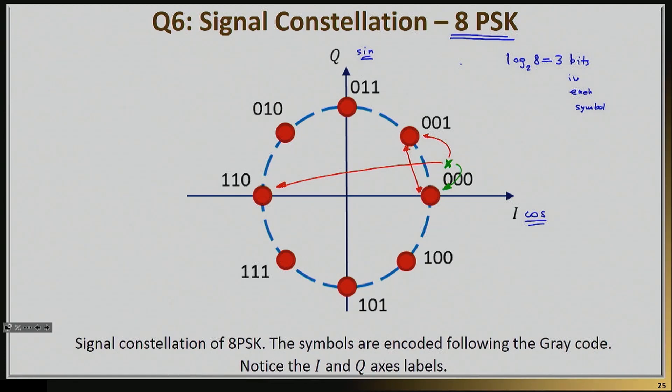The larger you make actually the distance, the less likely it is that you're going to have an error. And that's the value of this type of a graphic representation, is the minute you actually see one of those diagrams, you can make a decision immediately of what's the tolerance of that system to noise.